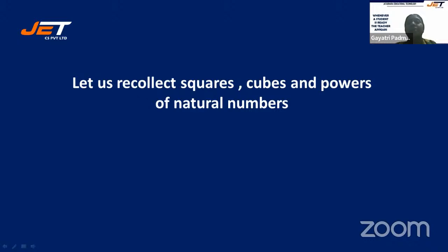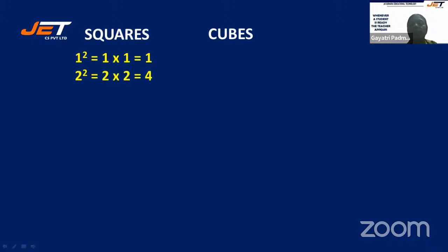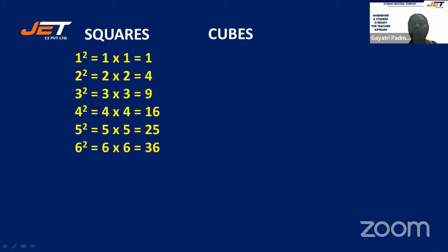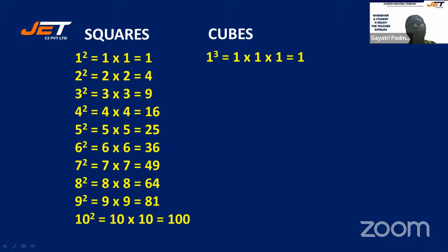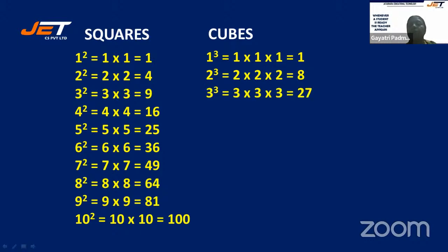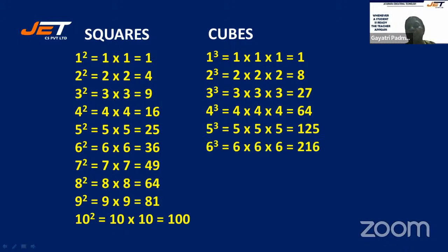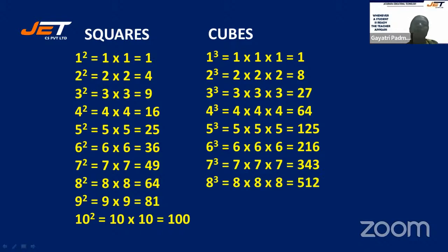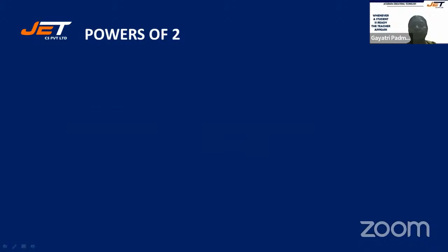Before we start with mental ability, let us recollect squares, cubes, and powers of natural numbers. Square means multiplying a number twice: 1×1, 2×2, 3×2, and so on. Cube means multiplying three times: 1×1×1, 2×2×2, up through 10×10×10.